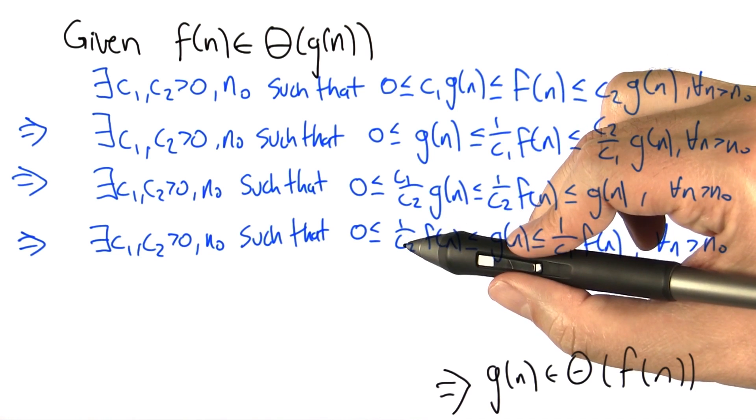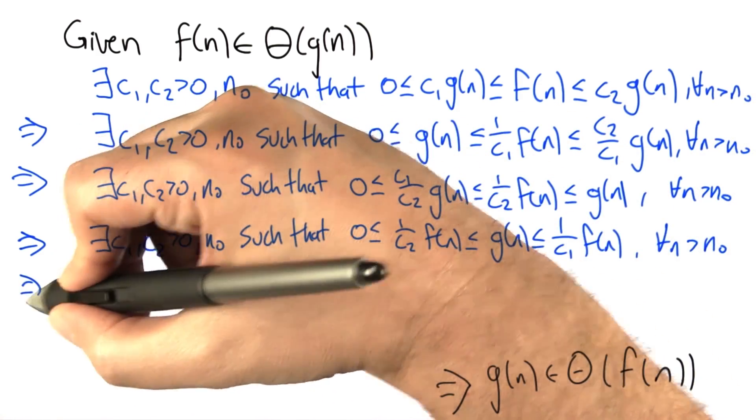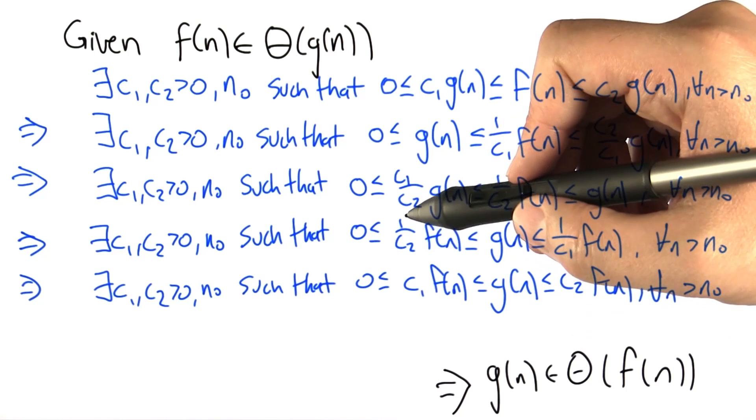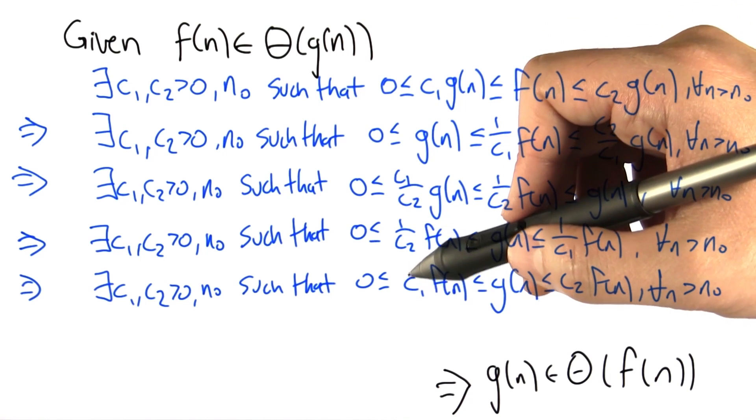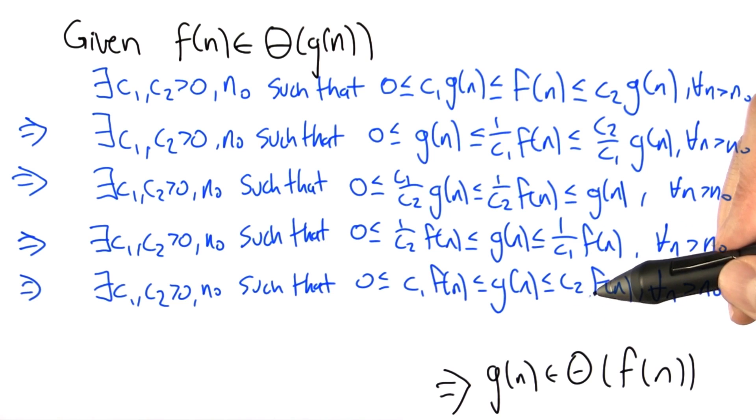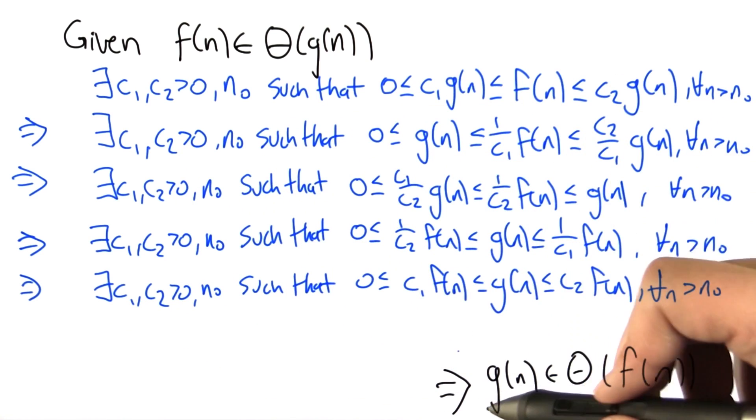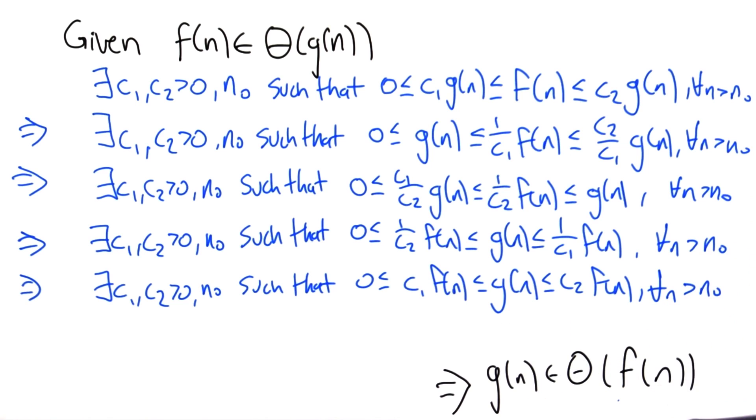Now notice that 1 over c2 and 1 over c1, those are just constants. So we can rename 1 over c2 as c1, and this is exactly the definition of big theta. So we can infer that g of n is in big theta of f of n.